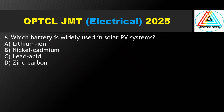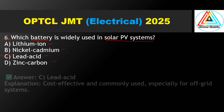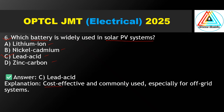Question No. 6: Which battery is widely used in a solar PV system — lithium-ion, nickel cadmium, lead acid, or zinc carbon? The correct answer is option C, lead acid battery. Lead acid batteries are cost effective and commonly used, especially for off-grid systems.